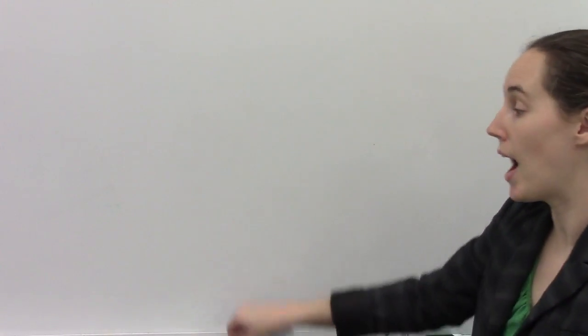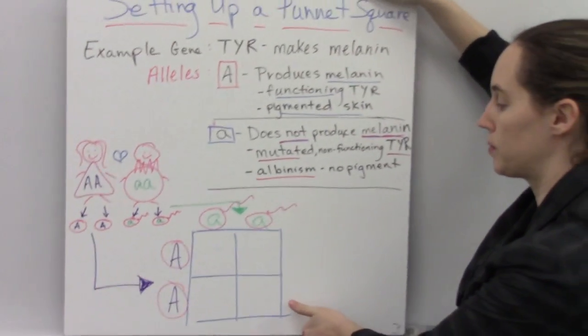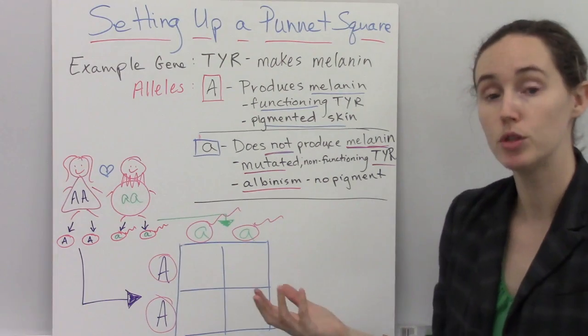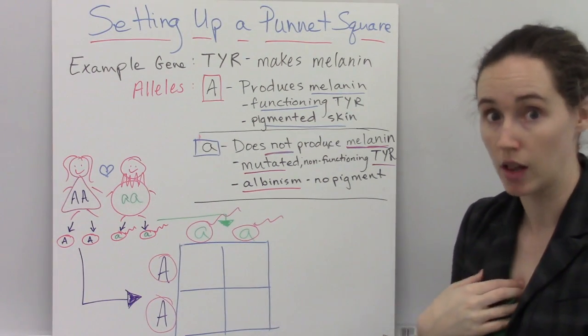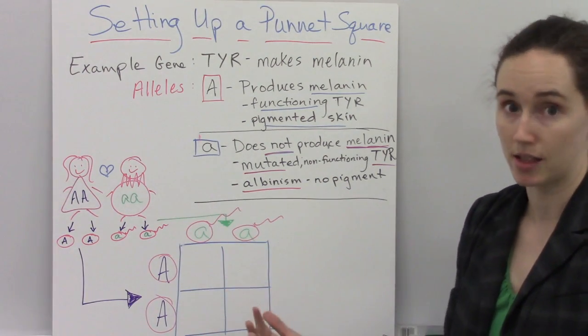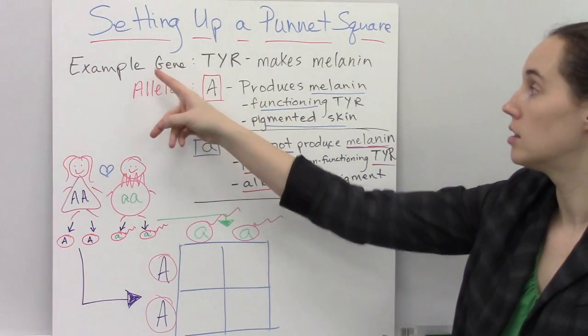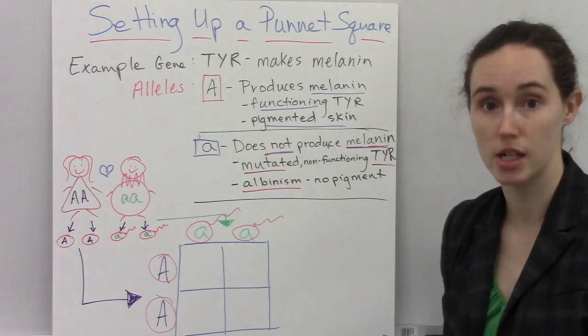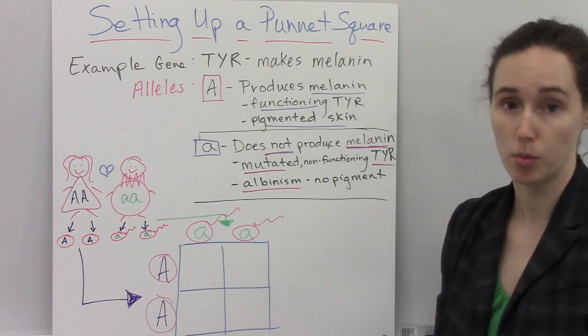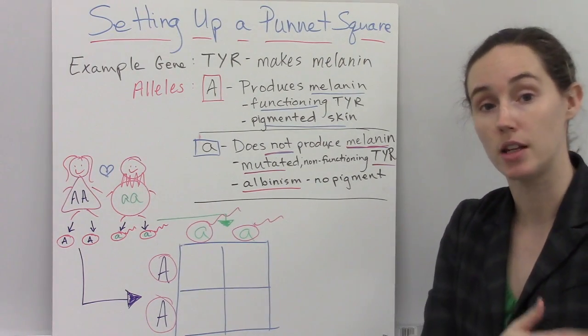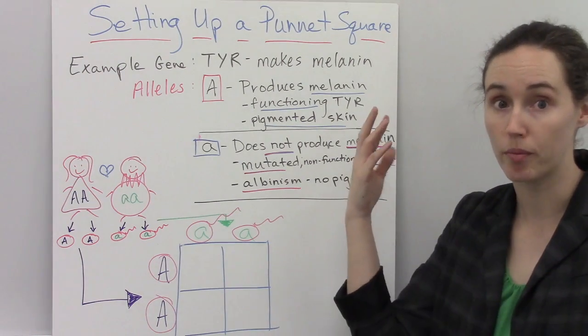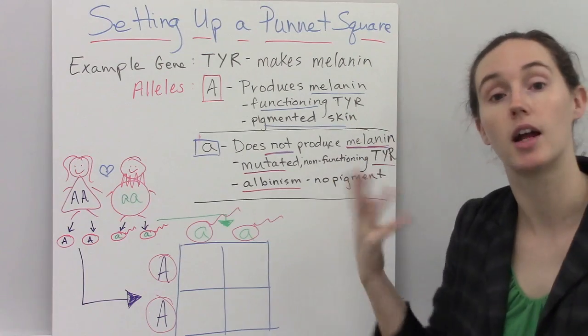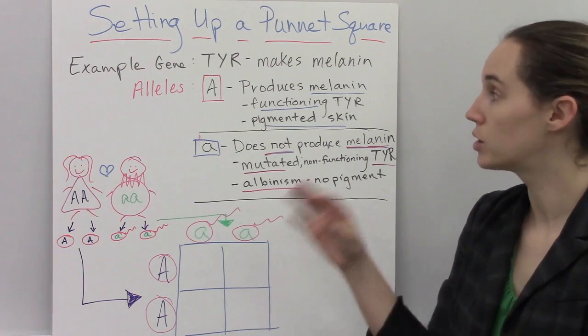Next we're going to look at how to set up a Punnett square. Now the example gene and trait that we're going to follow is the gene called TYR. This gene codes for the production of the protein tyrosinase, which is important in the production of melanin, which makes the color pigment in your hair and eyes and skin.